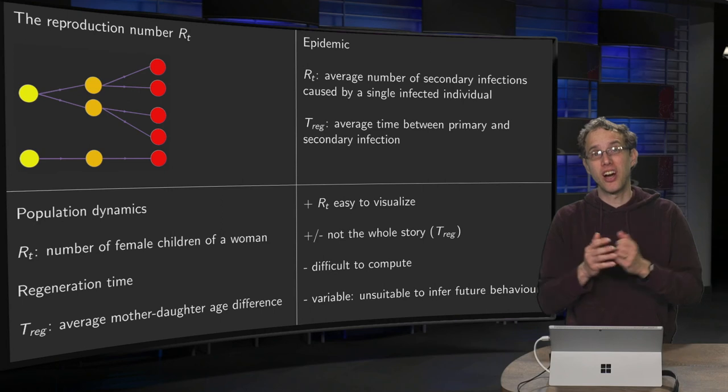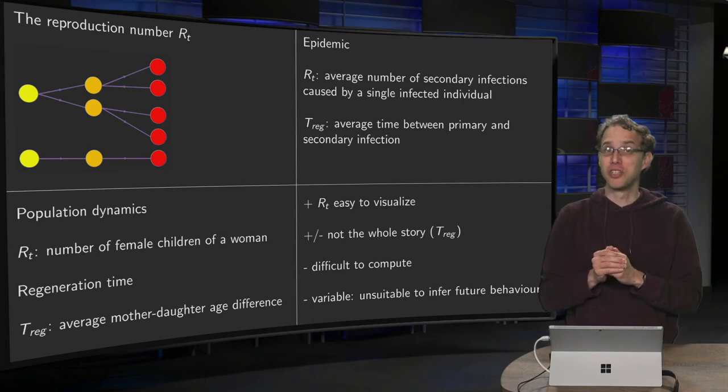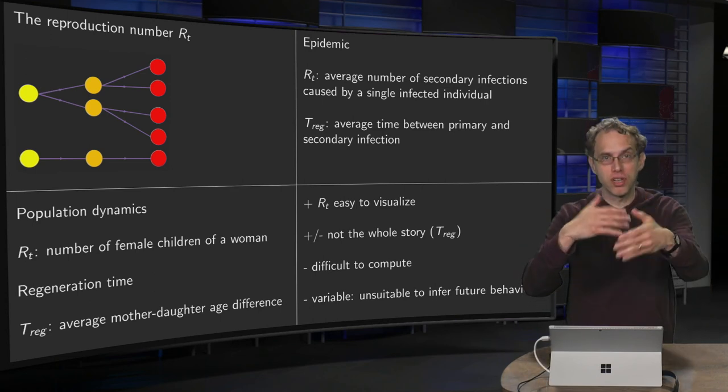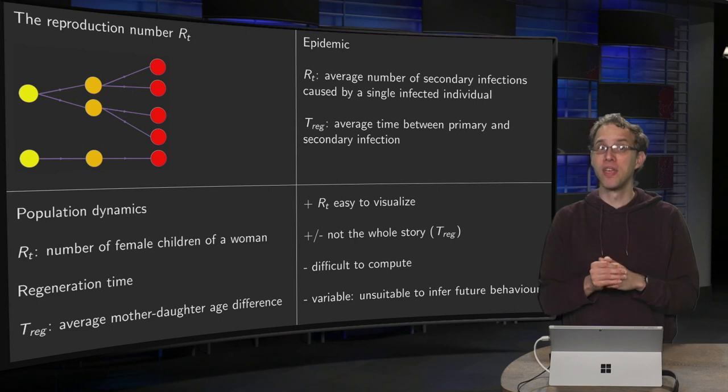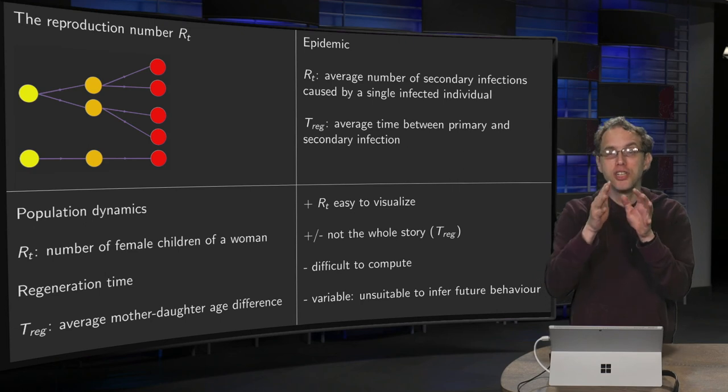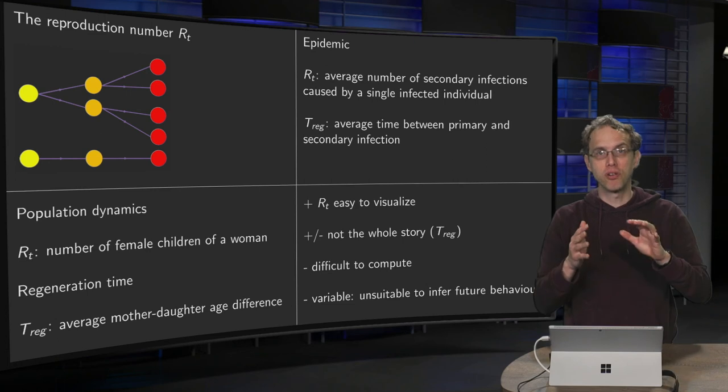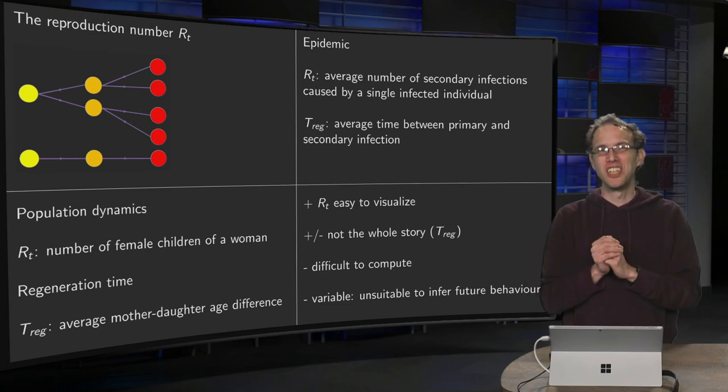Plus minus, well, this RT is not the whole story. It matters a lot what the regeneration time is. With a longer regeneration time and an RT bigger than one, you will grow, but it will take some time before it is growing. Whereas with a very small regeneration time, even if your RT is just above one, you can still grow very fast. So this RT is not the whole story. You also need your regeneration time. Fortunately, this regeneration time is more or less known and more or less constant. So that's why I put a plus or minus. It's not that bad.